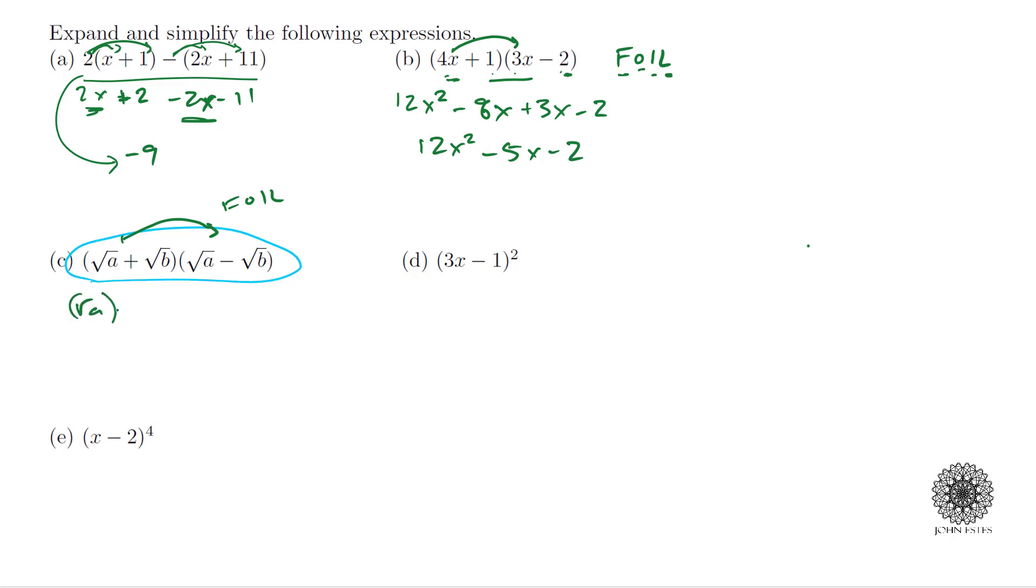My outside terms, I have a negative square root of b times the square root of a, so that becomes a negative square root of a, square root of b. Then you have the inside, so that's a plus square root of a times square root of b, and then you have the last, which would be a negative square root of b squared.